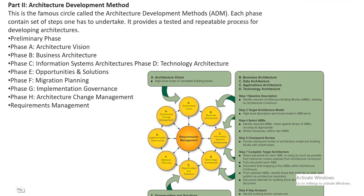The second part is architecture development methods, known as ADM — it is a very main part. There are primary phases: A, B, C, D, E, F, G, H. Phase A is architecture vision, providing a high-level module and capability building blocks. B is business architecture, C is information systems architecture, D is technology — how technology is adopted into the business. E is opportunity and solutions, F is migration planning, G is implementation governance, and H is architecture challenges and management.